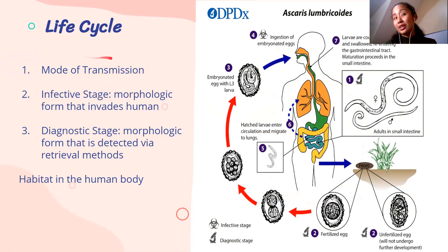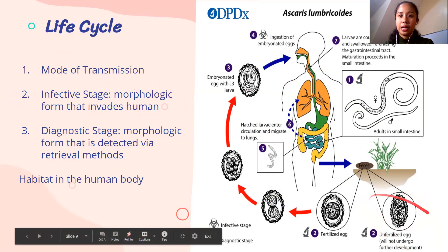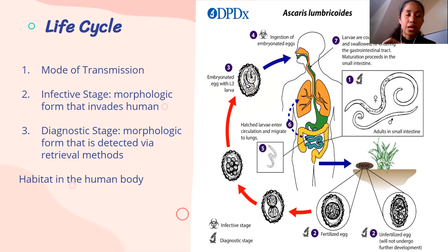The life cycle is very important so we know how the disease is transmitted — direct contact, sexually transmitted, fecal-oral, through nasal passages, mosquito bites, vector-borne. We can also know the infective stage: the morphologic form that invades the human. For example, if you eat an unfertilized Ascaris egg, that's not the infective stage, so you won't be infected. Only an embryonated or fertilized egg is the infective stage.